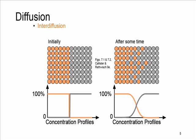In an alloy, atoms tend to migrate from regions of high concentration to regions of low concentration. Initially we have atom A and atom B separated. After some time the orange atoms migrate through the gray ones and vice versa. We can show the concentration profile for these two types of materials, and after some time we have a different concentration profile for both types of atoms.